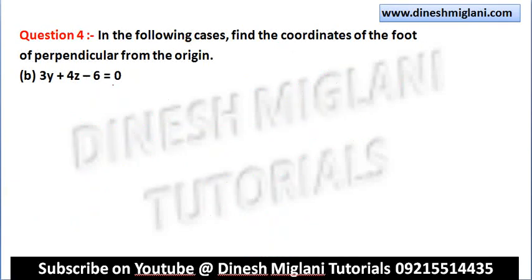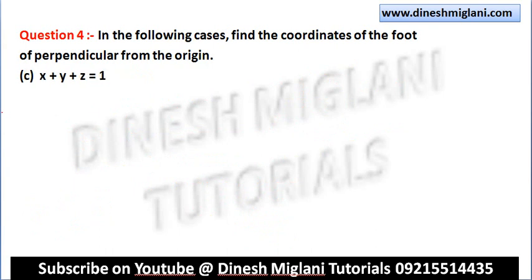The remaining sub-parts of this question follow the same method: identify the direction ratios of the normal, form the parametric line through the origin, substitute into the plane equation to find λ, and compute the coordinates.